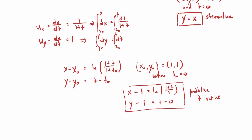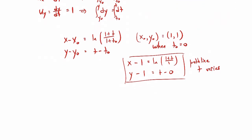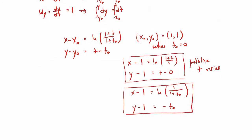Now for the streak line, we start with the same form of the differential equations as for the path line, so we get the same solution. For the streak line through the same point, x minus 1 equals natural log of 1 over (1 plus t-naught), and y minus 1 equals negative t-naught. So that's our streak line equation.